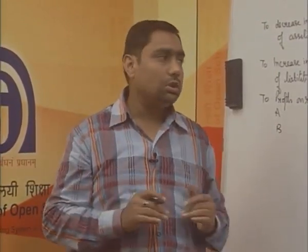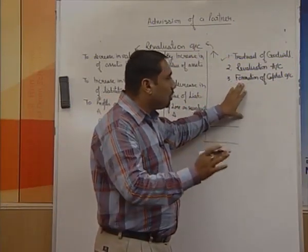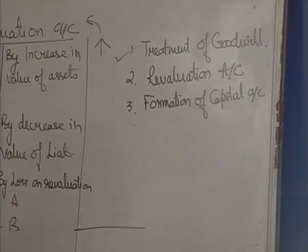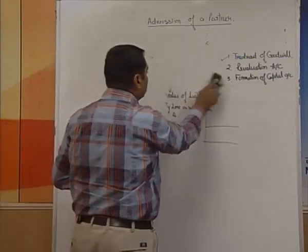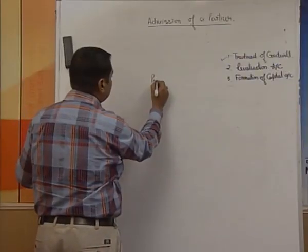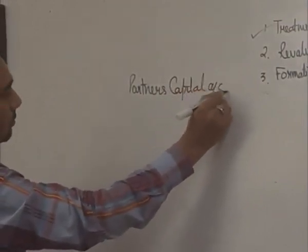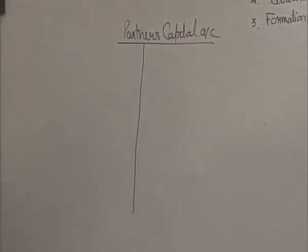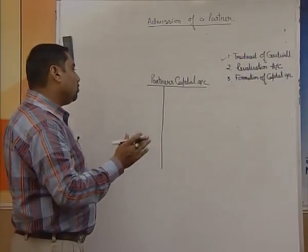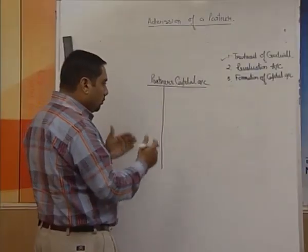Once you have the revaluation account, the third thing is the formation of the capital account — how capital accounts are prepared in case of admission of a partner. First of all, make sure whether it is a fixed capital account or a current fluctuating account. If it is fixed, prepare two different accounts: fixed capital and current account. If it is fluctuating, one single account is sufficient.